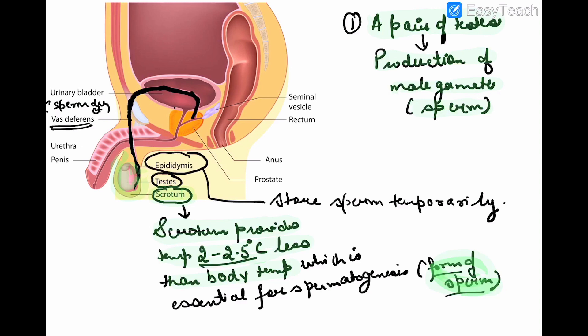The testes further lead into the epididymis. The function of the epididymis is to store the sperm temporarily. The epididymis further continues into a duct known as the sperm duct or vas deferens.